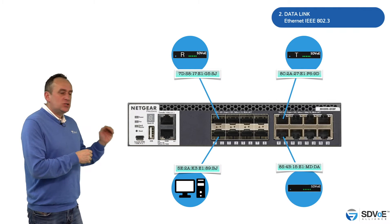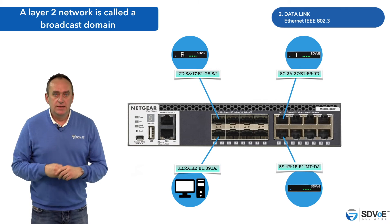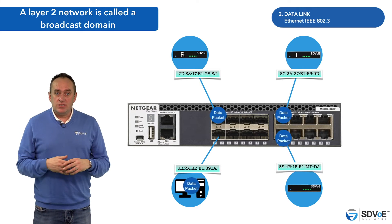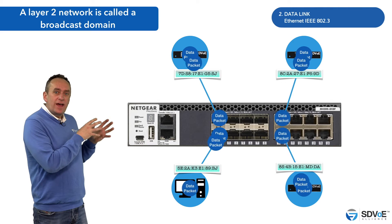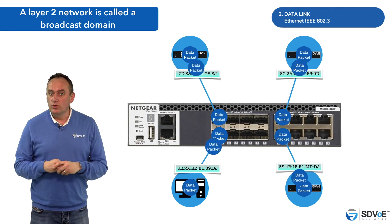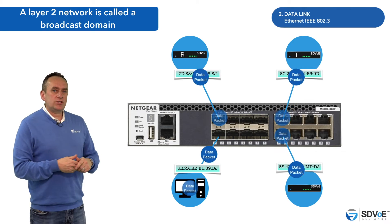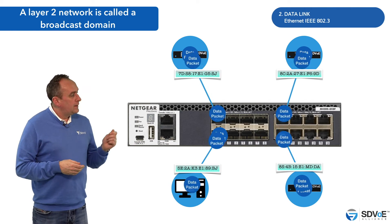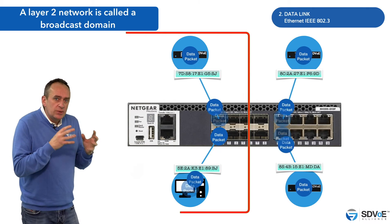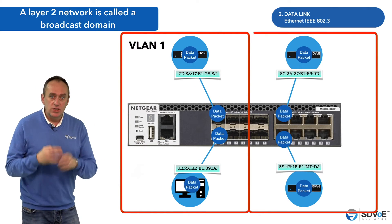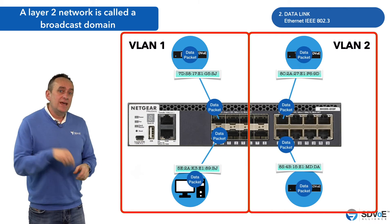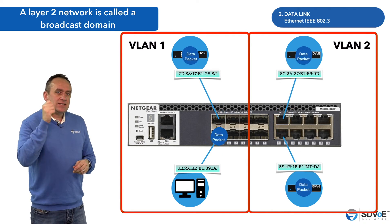In networking, a layer 2 network is called a broadcast domain. Whenever you hear this term, think of it as a network at layer 2. A broadcast is a data packet which is intended for every host that can be reached via layer 2 messaging, and the broadcast domain is the set of hosts who will receive it. A broadcast domain is commonly determined by physical connectivity — any hosts connected to our switches are on a broadcast domain. It is however possible to subdivide our physical network into multiple virtual networks using a technique called VLAN, and we'll take a deeper dive into VLANs very soon here on the SDVoE Academy.